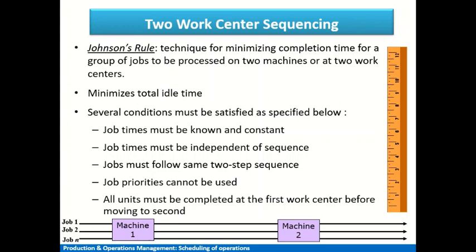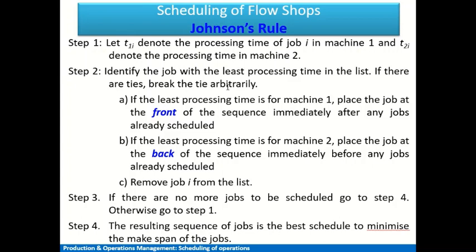Once these conditions are satisfied, we apply Johnson's Rule as follows. We find the shortest processing time among all jobs. If that shortest time is for machine one, we place that job at the front of the sequence, immediately after any jobs already scheduled. If the shortest time is for machine two, we place that job at the back of the sequence, immediately before any jobs already scheduled. Once placed, we remove that job from the original list.